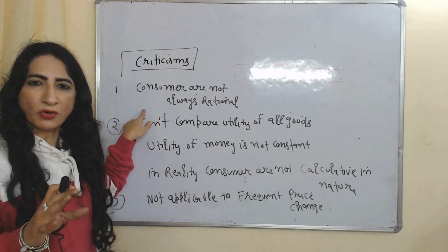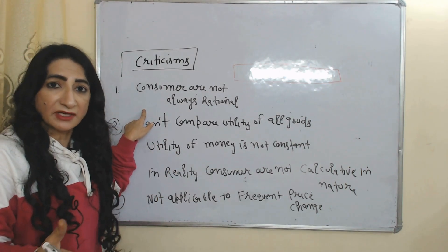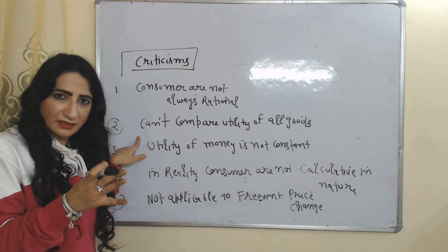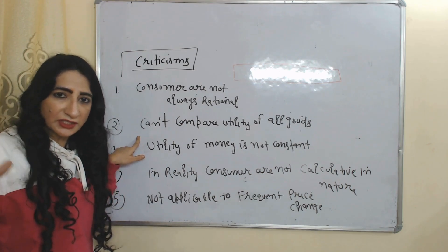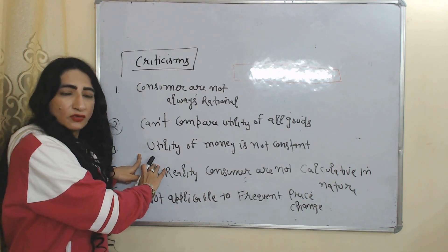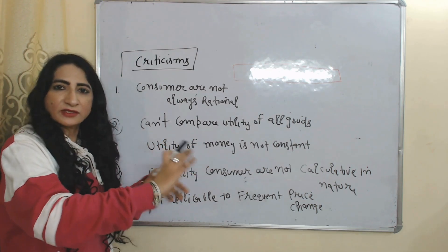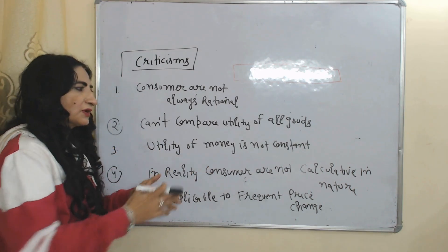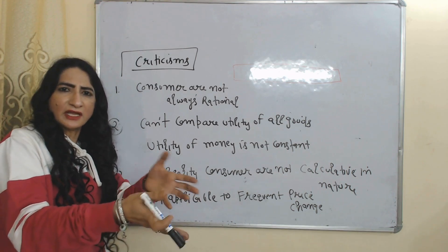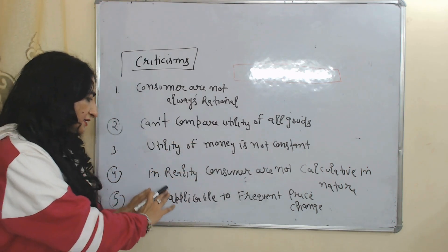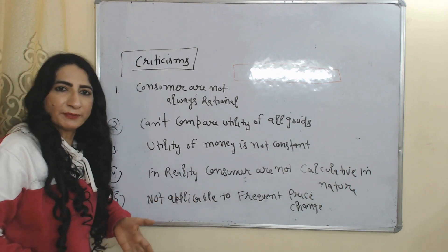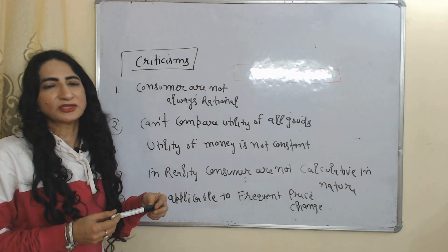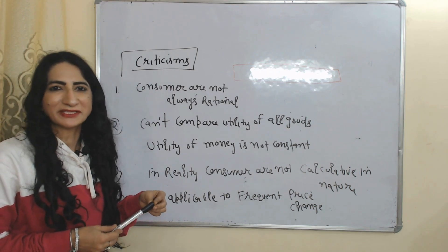Criticisms of the law: Consumers are not always rational — sometimes their behavior is influenced by emotions. We cannot always compare utility across all goods; for example, how do you compare utility from a mobile with utility from a scooter? This law assumes marginal utility of money is constant, but that is not always true. In reality, consumers are not so calculative every time they measure their utility. Also, this law is not applicable when prices change frequently. That is all about the Law of Equimarginal Utility. Thank you so much for watching. Bye, take care.